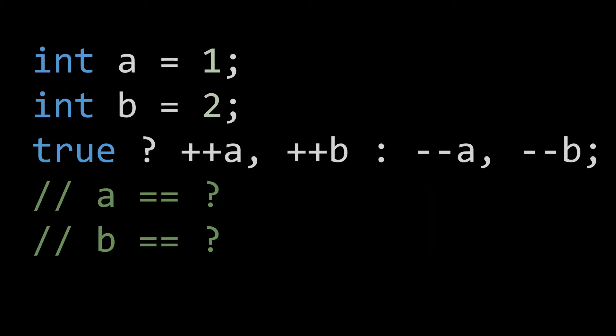Let's take a look at our last example before we get into a use case. Take a look at this simple example. We set a to 1 and b to 2. Have a look at this ternary operator and see whether you can infer what a and b will evaluate to correctly.